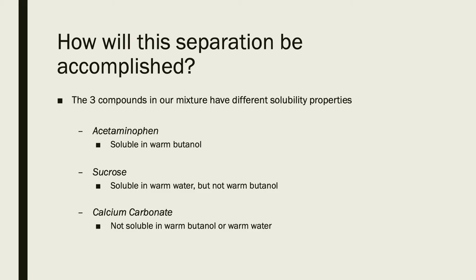Our other two compounds are not soluble in warm butanol. So when we have a mixture of all three as one combined powder, if we add hot butanol, the acetaminophen should dissolve in it — that's what it means to be soluble. The acetaminophen will dissolve in the warm butanol, but the sucrose and calcium carbonate won't. If we then remove that liquid butanol containing dissolved acetaminophen, we've effectively removed one component. To get our acetaminophen back, we can evaporate the butanol and recover it as a solid.